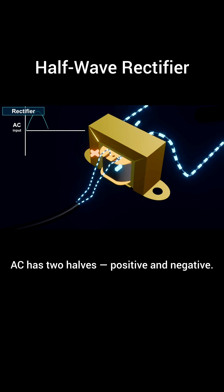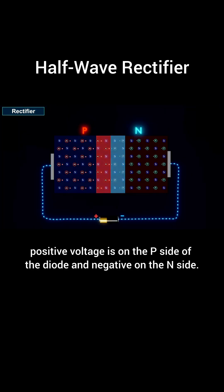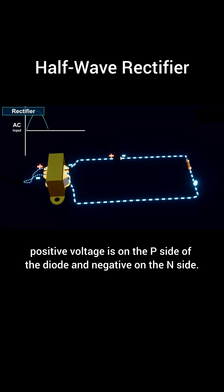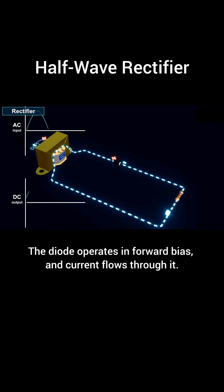AC has two halves, positive and negative. When the positive half cycle of AC is applied, positive voltage is on the P side of the diode and negative on the N side. The diode operates in forward bias and current flows through it.